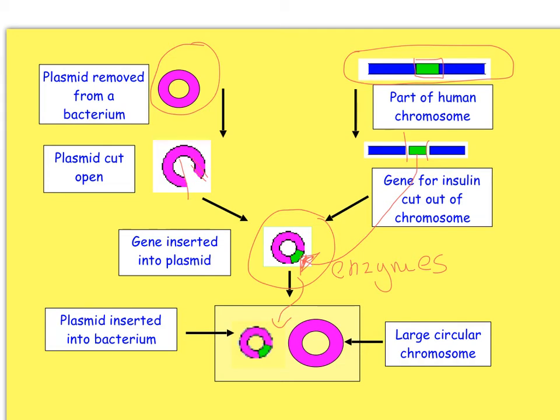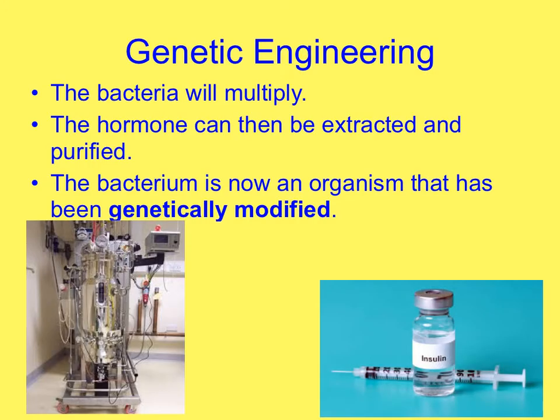I'm just representing this happening with one bacteria, but what happens is you get quite a few of them with the plasmid inserted. Then that bacteria starts to multiply. It's put into a large tank, something like this, maybe even larger, called a fermenter. In there it will be given lots of nutrients, sugars, the right temperature, the right pH and so on. The bacteria all start to multiply in that fermenter.